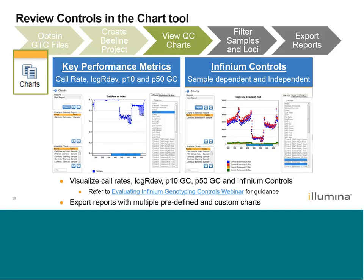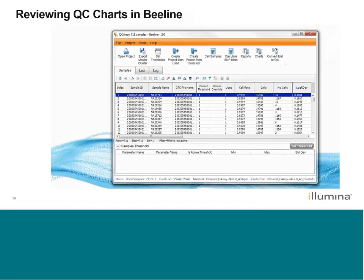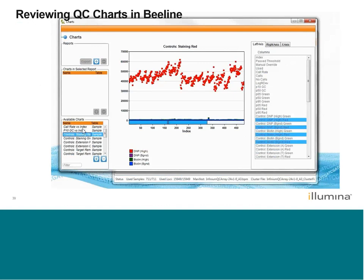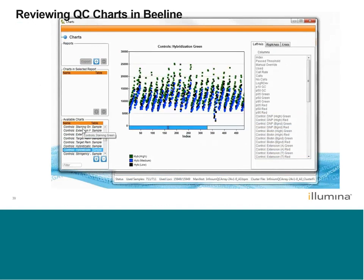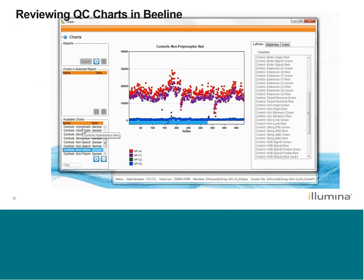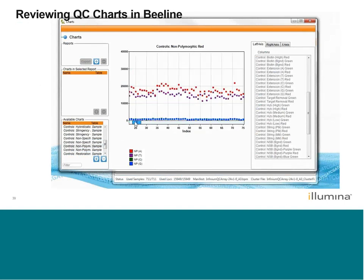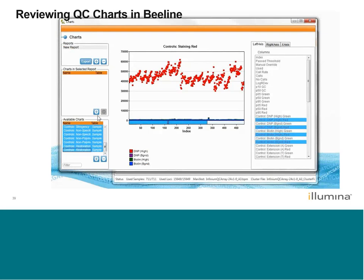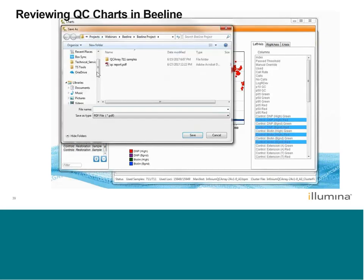You can also export a PDF report containing however many charts you want to include. In the demo: in my Beeline project I go to Charts — the available charts come pre-formatted with every install of Beeline, but you can add other charts you'd like to see. All the controls typically seen in the Genome Studio controls dashboard are also shown here. You have the option to scroll left and right or use the scroll wheel to zoom in on controls to look closer at certain samples. You can select the charts you want, add them to a report, and export it to a PDF to share with a collaborator or keep in your records.